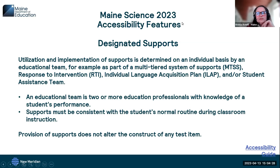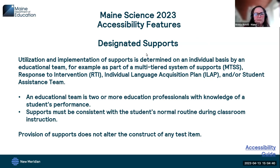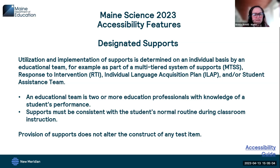The next level of supports is designated supports, which are determined on an individual basis by an educational team. Examples include a multi-tiered system of supports, response to intervention, or an individual language acquisition plan. The two most important things to remember: an educational team is two or more education professionals with knowledge of a student's performance, and the supports must be consistent with the student's normal routine during classroom instruction. Designated supports do not alter the construct of any test item — they don't change what is actually being assessed.